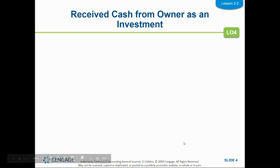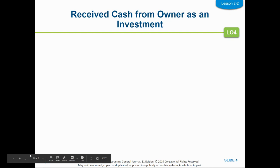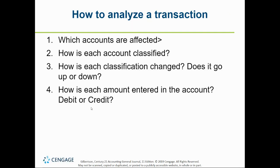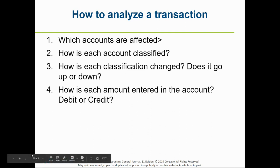When we did our transactions in chapter one and up to this point, we've been looking at how they are placed in a T-account. When we talk about how they are entered, we want to know: is it a debit or credit, are they increasing or decreasing, and which accounts are affected?